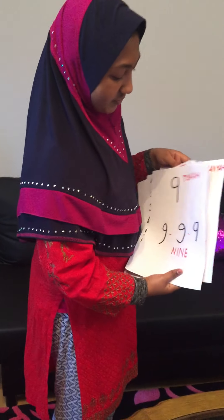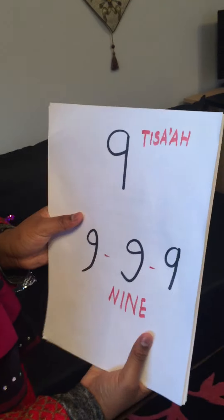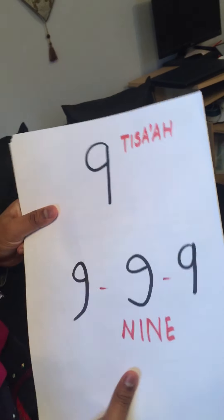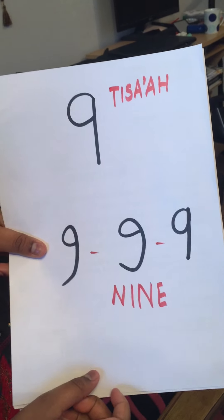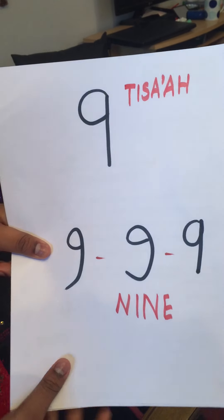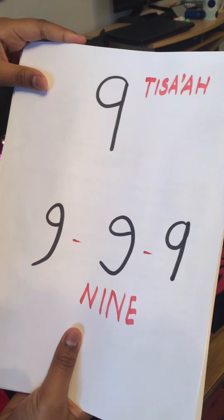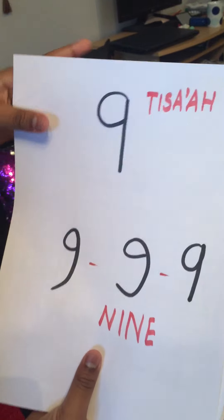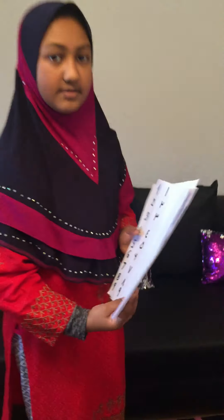Number nine — the last number — in Arabic and English is the same, and it's called Tis'a in Arabic. Some people close the bottom, which makes it look a little different. And that brings us to the end of all our numbers.